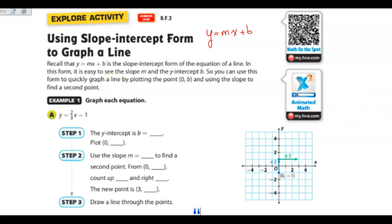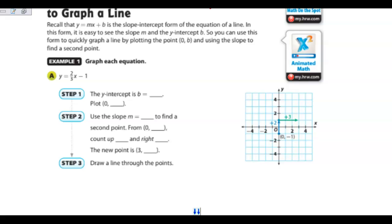Just a quick review. The y-intercept in this equation, y equals 2/3x minus 1, you can write it above if you need to, your b is at negative 1. So therefore, the y-intercept on the graph is going to be at 0, negative 1. So that's this point right here.